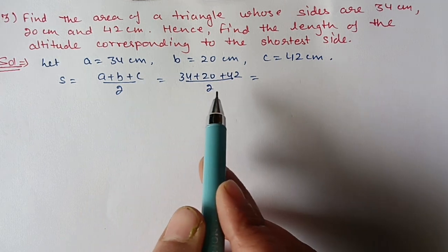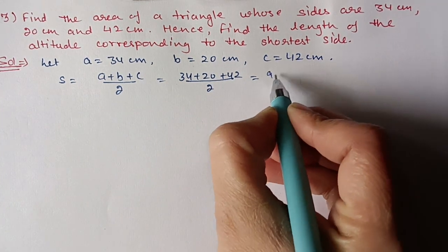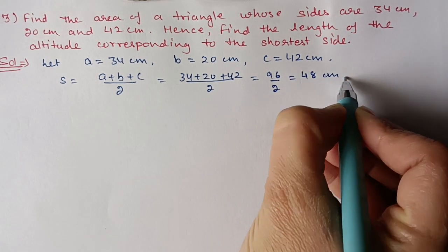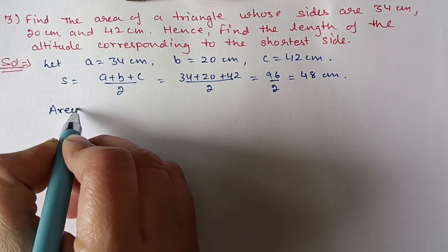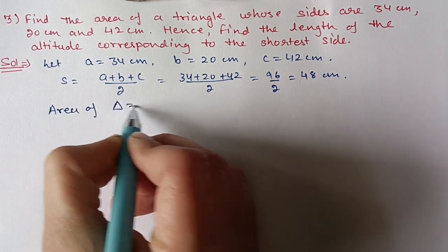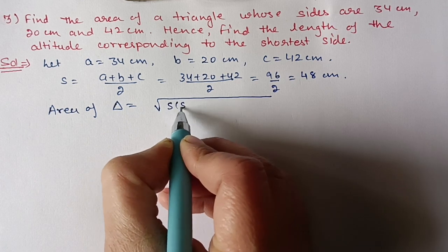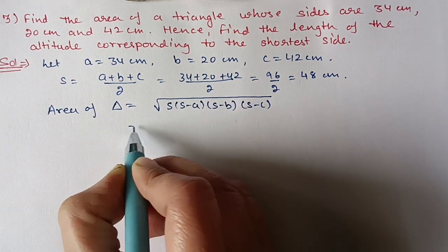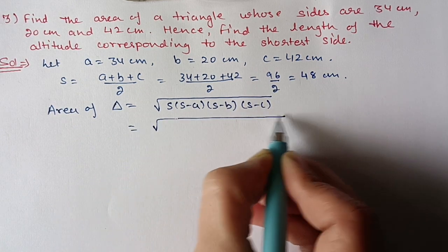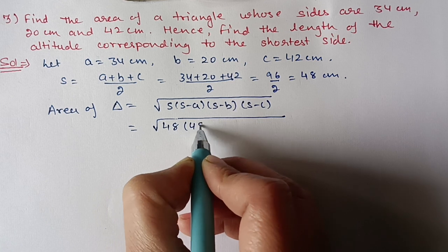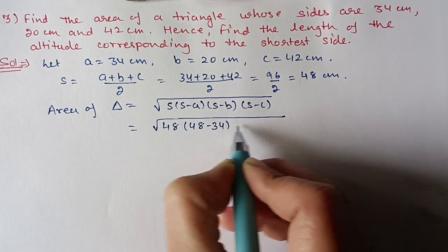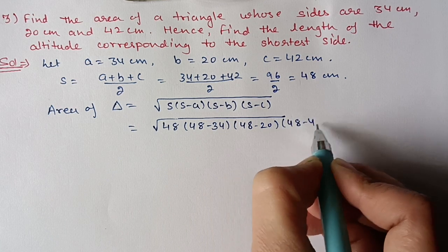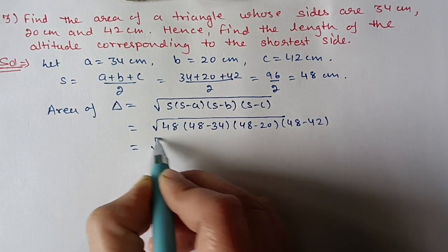Semi-perimeter s = (34 + 20 + 42)/2 = 96/2 = 48 cm. Area = √[s(s−a)(s−b)(s−c)] = √[48 × (48−34) × (48−20) × (48−42)].